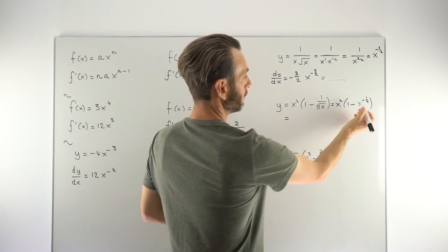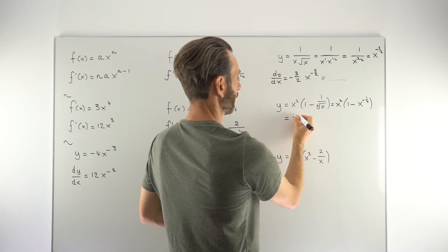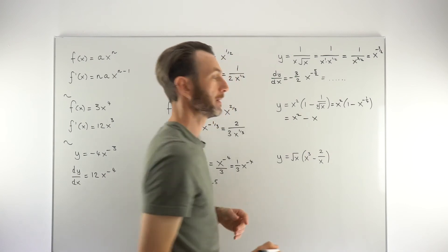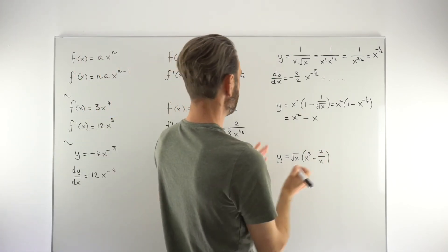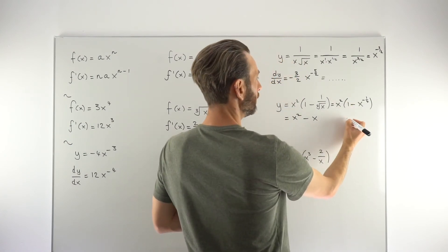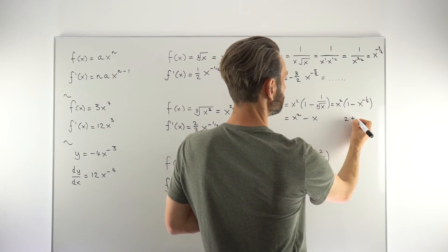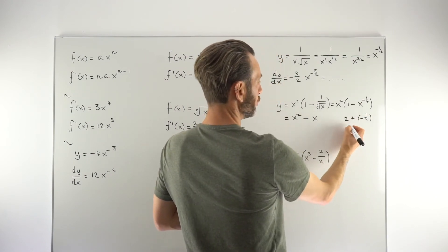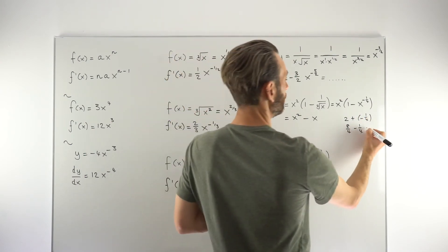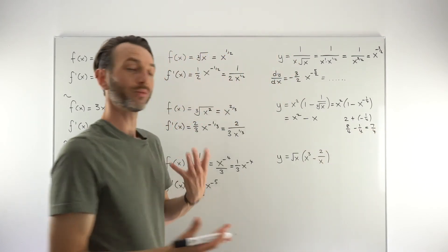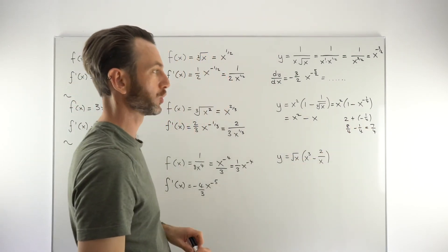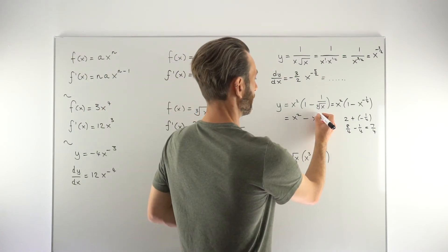Still not quite differentiable because of the bracket and the product, so multiply it out. X squared times one is just X squared. Then X squared times X to the minus one over four: add the powers together, making the two into eight over four, so eight over four minus one over four equals seven over four. The combined X term has a power of seven over four.